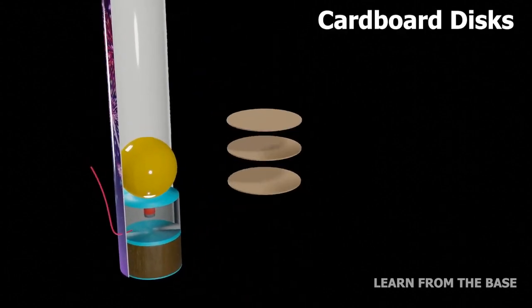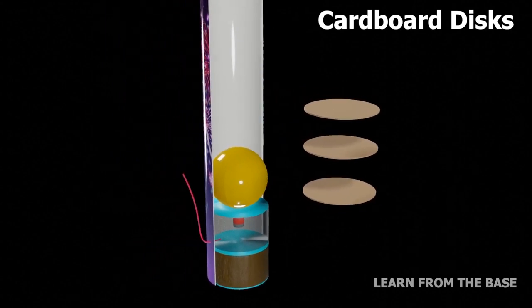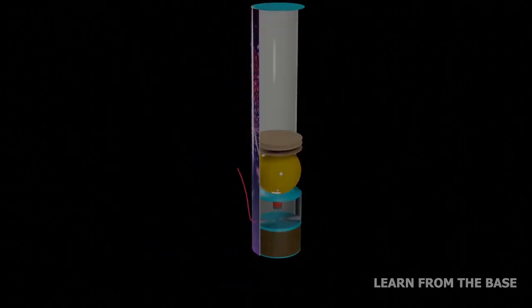These are the cardboard discs. They help to keep the shell in place within the mortar. Meaning that, they provide proper sealing for the shell.